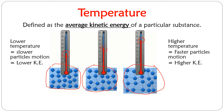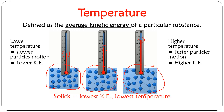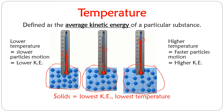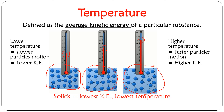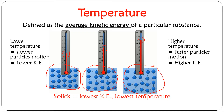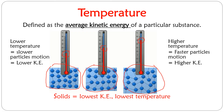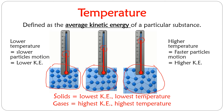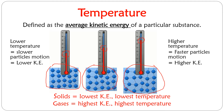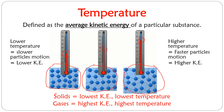Of the three states of matter — solids, liquids, and gases — solids have particles that move very slowly because they do not have a lot of room to move. The most they can do is vibrate in place, which is why they have the lowest kinetic energies and therefore the lowest temperatures. Gases, on the other hand, have a lot of room to move and their particles move all the time, so they have the highest kinetic energy and can reach the highest temperatures.